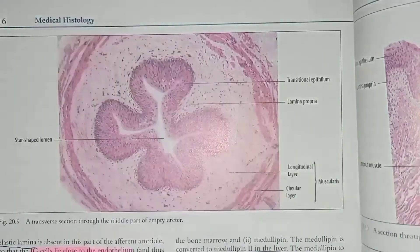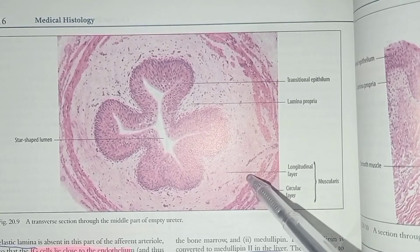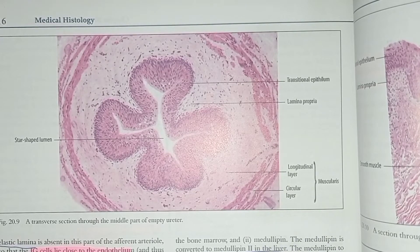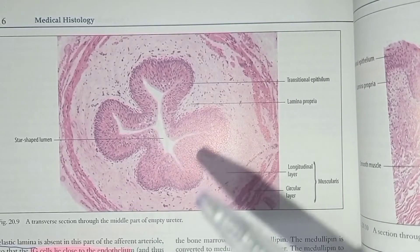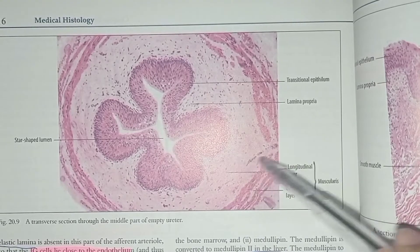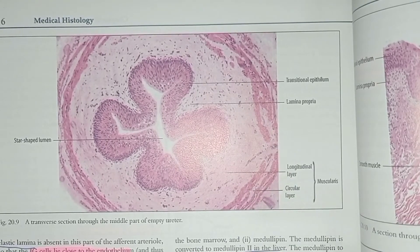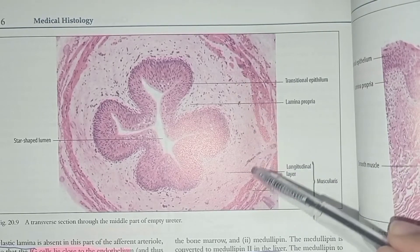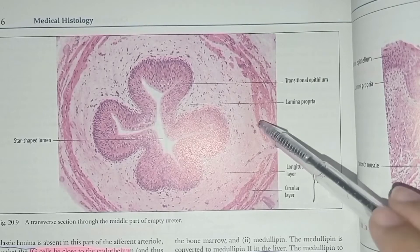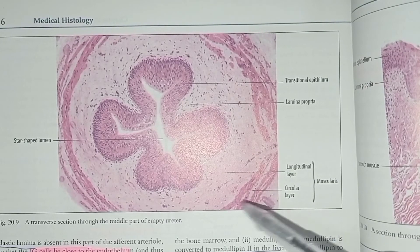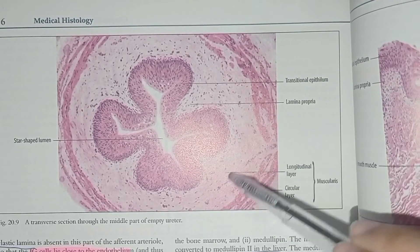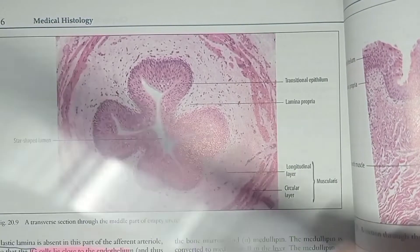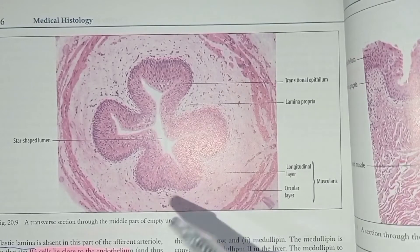Then we have the muscularis, which is just external to the lamina propria. There is some difference compared to other parts of the GI tract. If we divide the ureter into the upper third and lower two thirds, the upper third — closer to the kidney — will have two layers of muscularis: an inner longitudinal layer and an outer circular layer.